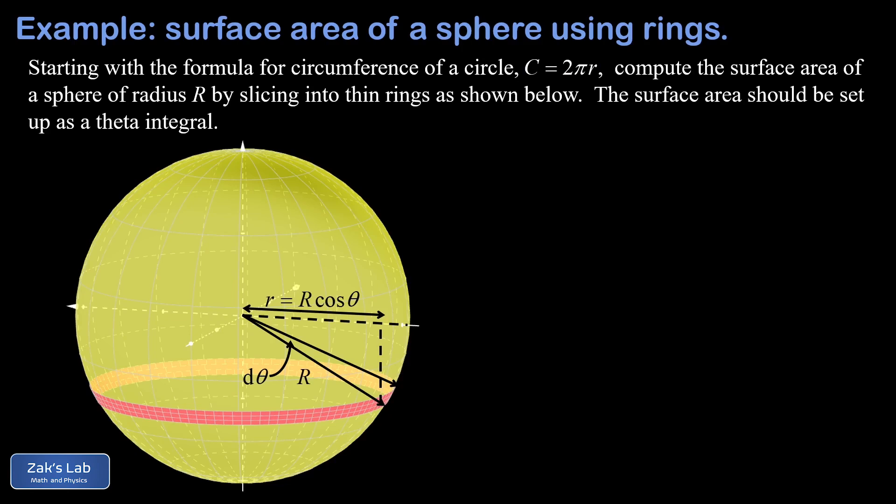That's just called d theta. This gives us the width or thickness of the ribbon by applying the old formula from geometry, s equals r theta.